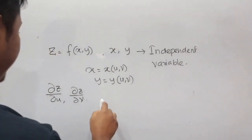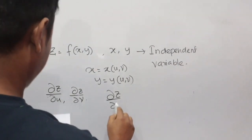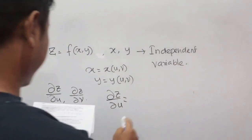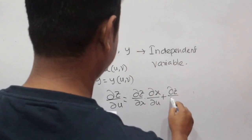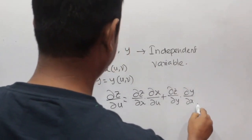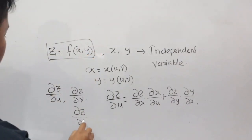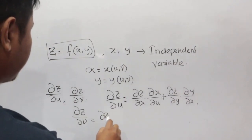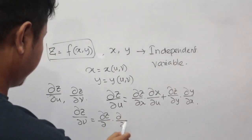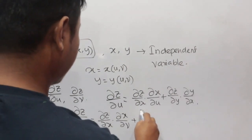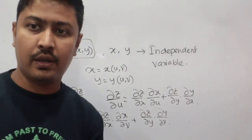The formula for the chain rule gives us ∂z/∂u and ∂z/∂v. Specifically: ∂z/∂u = (∂z/∂x)(∂x/∂u) + (∂z/∂y)(∂y/∂u), and ∂z/∂v = (∂z/∂x)(∂x/∂v) + (∂z/∂y)(∂y/∂v). These are the two formulas for the chain rule of a function of two variables.